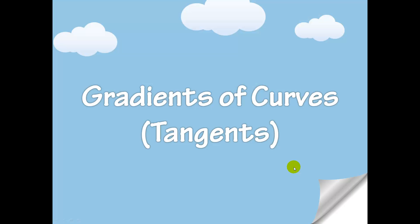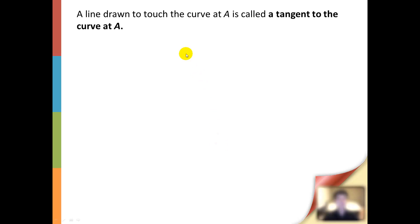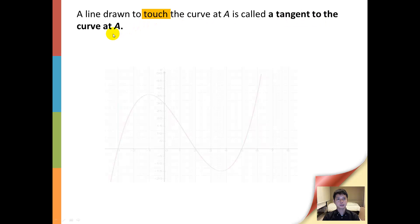In this part of the chapter, we shall learn how to find the gradient of curves using tangents. A tangent is a line drawn to touch the curve at point A, and it will be called the tangent to the curve at A.